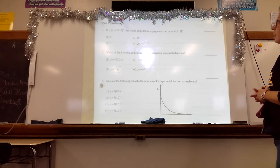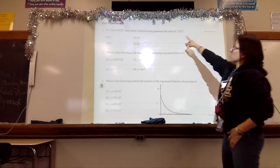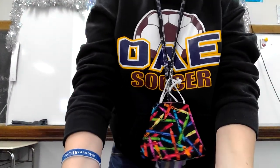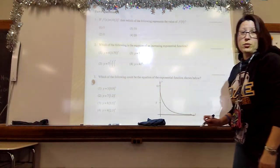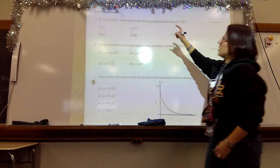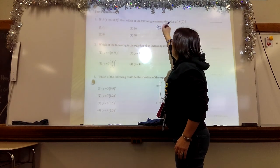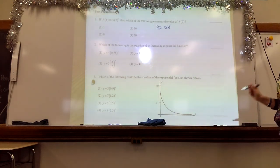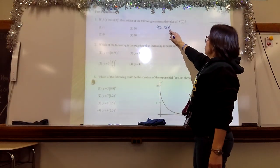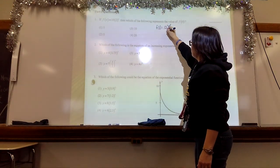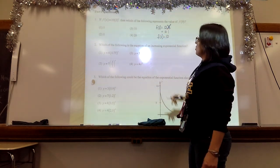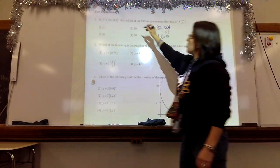If f of x equals 10 times 2 to the x, then which of the following represents the value of f of 0? So the x is missing and the 0 replaces that x. We're going to go into that equation and replace the x with the 0. So f of 0 would equal 10 times 2 to the 0. Remember, we talked about PEMDAS. You have to make sure that you do the exponents first. 2 to the 0 power equals 1. 1 times 10 is 10. So the function's value at 0 is 10. That's choice number 3.